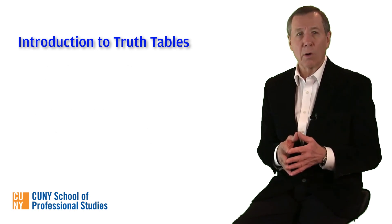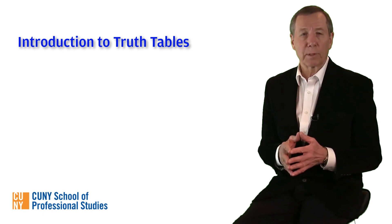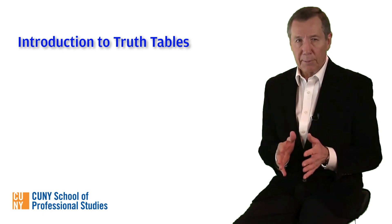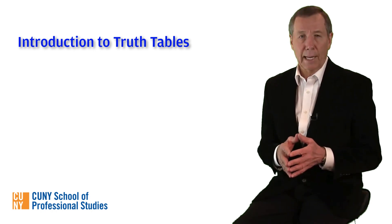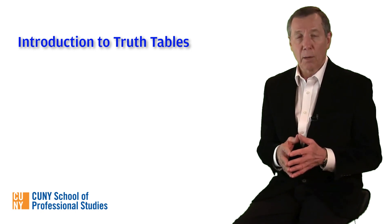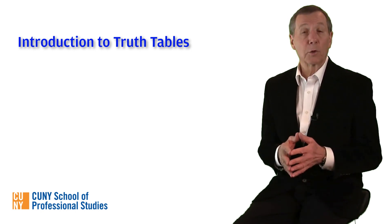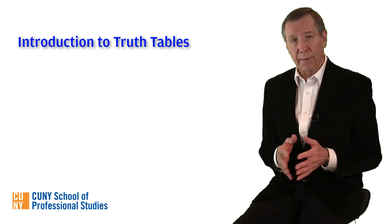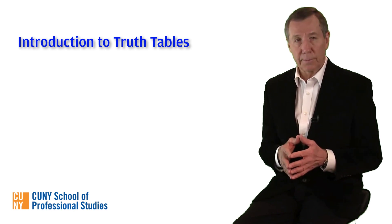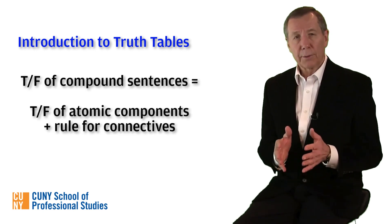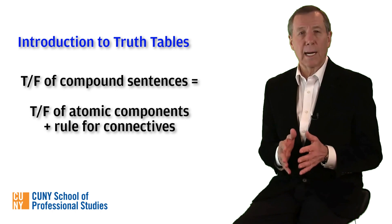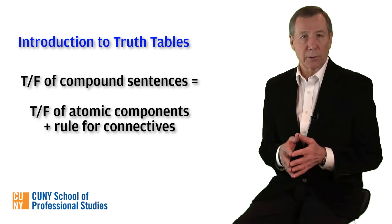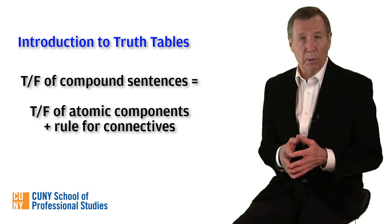The truth table method will also involve giving an interpretation of sentences, but we'll keep things very simple. We will not be concerned with what the individual sentence letters represent; we will only care whether they are true or false. In effect, we'll just assign truth values — T's and F's — to the sentence letters. As we've seen, the truth or falsity of larger compound sentences in sentential logic is just a function of the truth or falsity of their smaller parts.